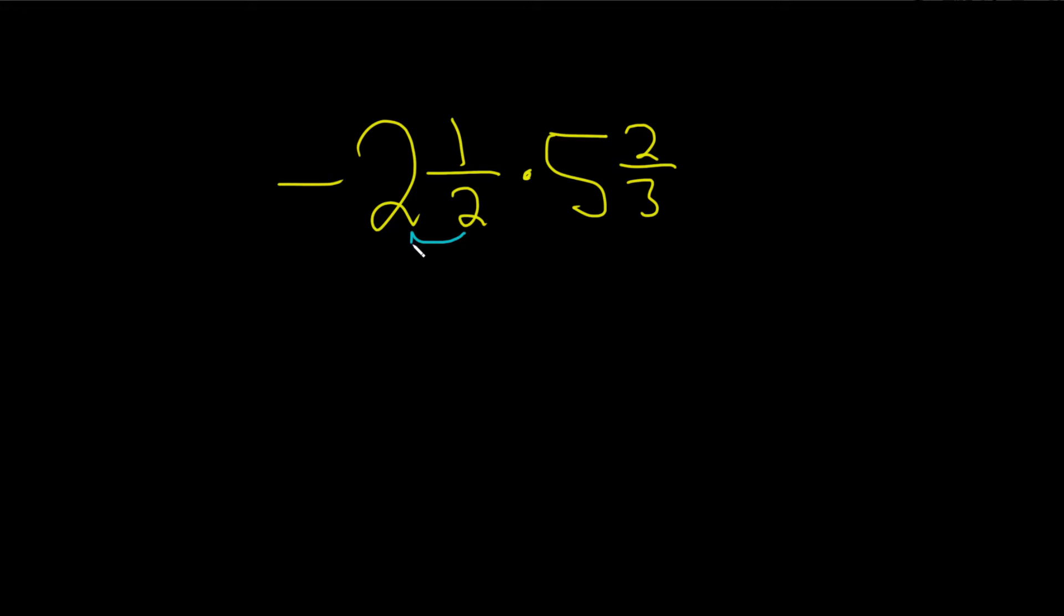So we're going to do 2 times 2, and then we're going to add the 1. So 2 times 2 is 4. 4 plus 1 is 5. So we write this as 5 over 2.